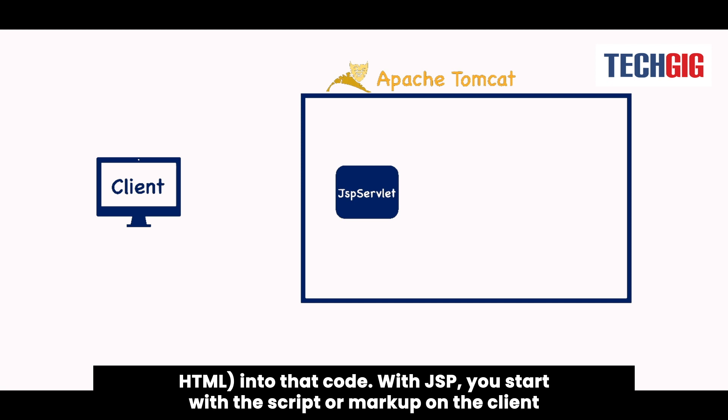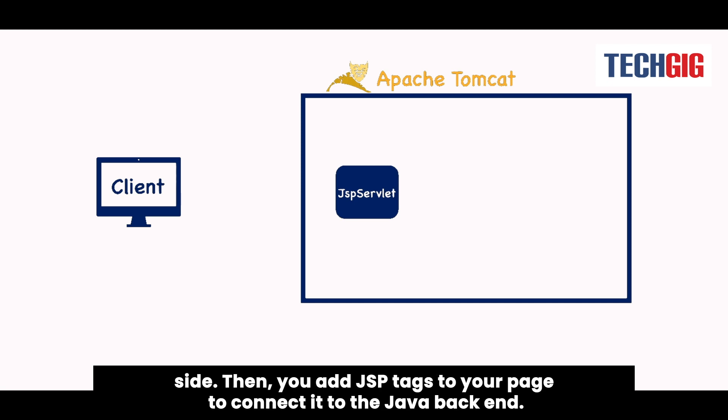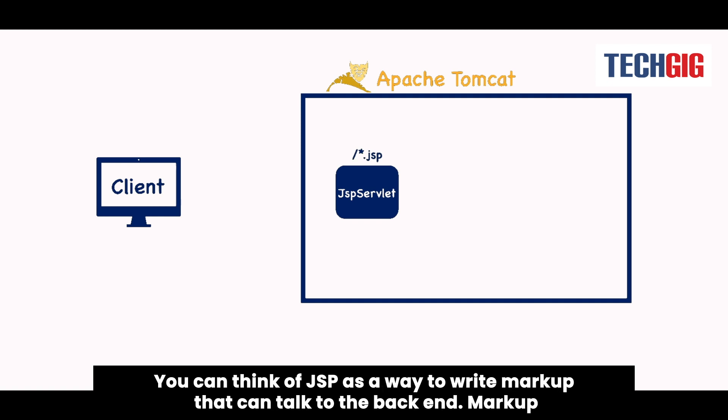With JSP, you start with the script or markup on the client-side, then you add JSP tags to your page to connect it to the Java backend. You can think of JSP as a way to write markup that can talk to the backend.